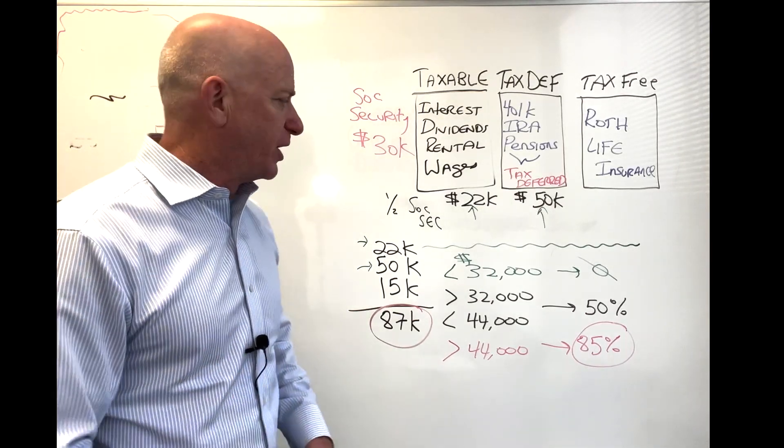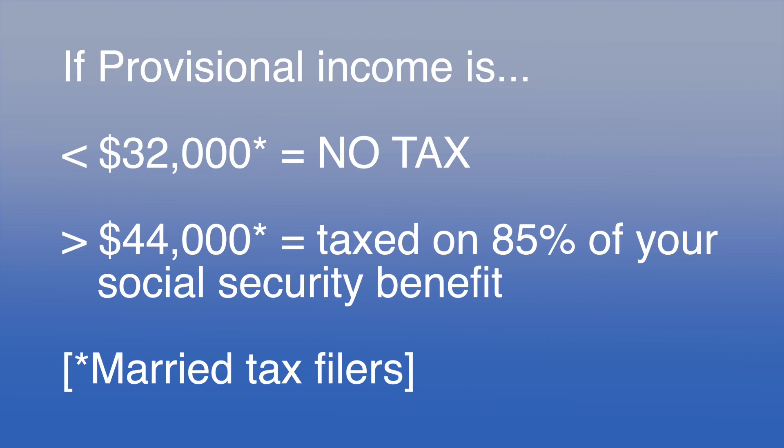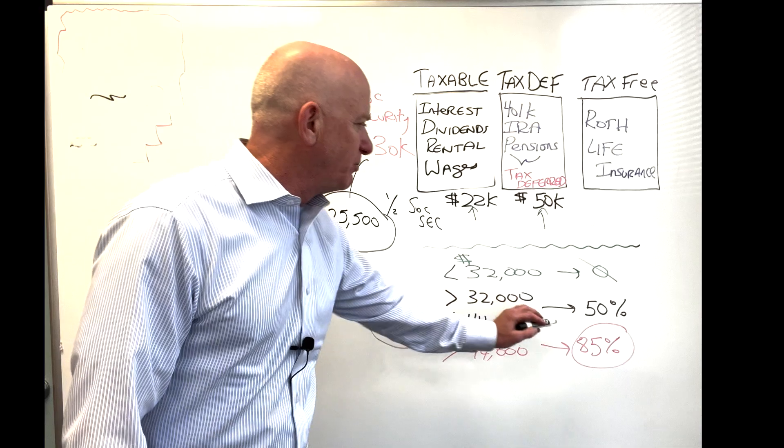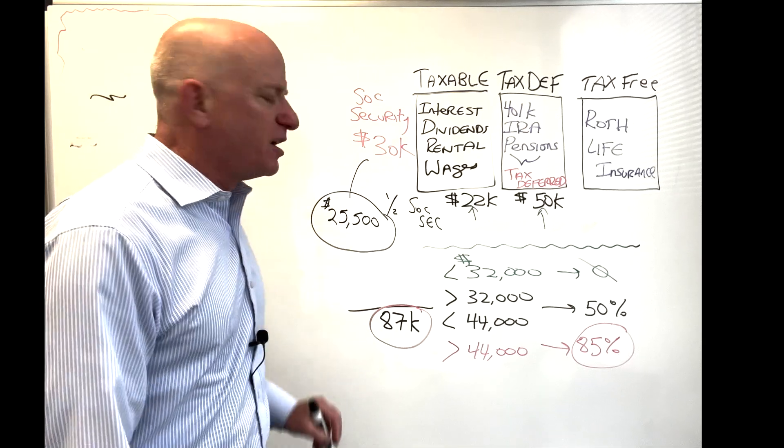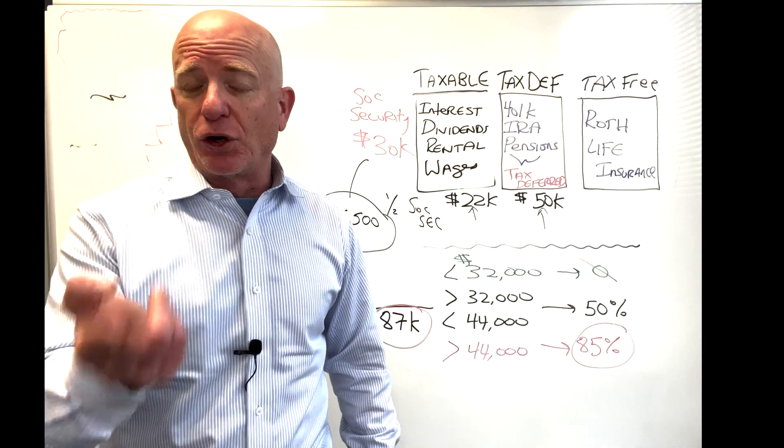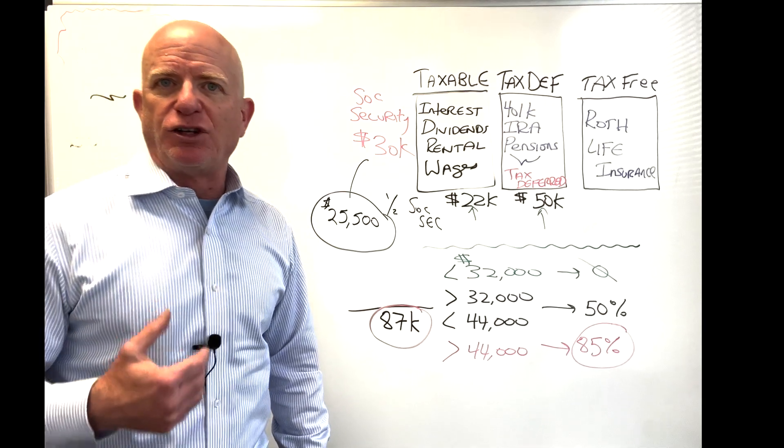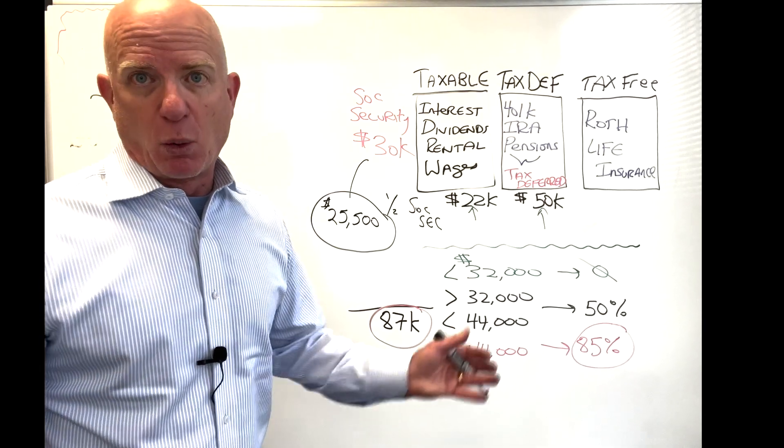Now here are the limits the IRS uses to determine whether or not you're gonna pay. If your provisional income is less than $32,000, you're not taxed on any of your Social Security. If your provisional income is greater than $44,000, you're gonna pay tax on 85% of your Social Security benefits. So in this case, $30,000 times 85% is $25,500. That's the amount of income you're gonna have to declare on your tax return. That can be quite a hit.